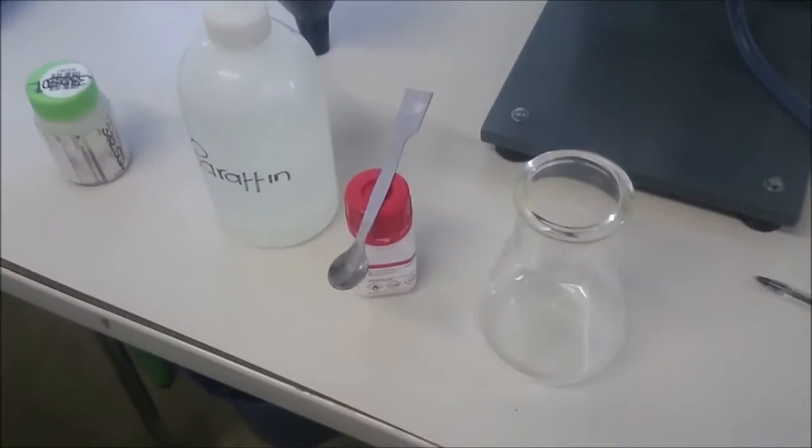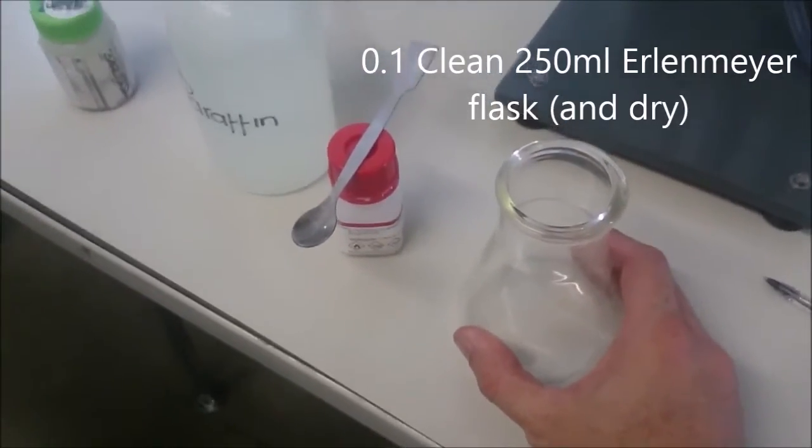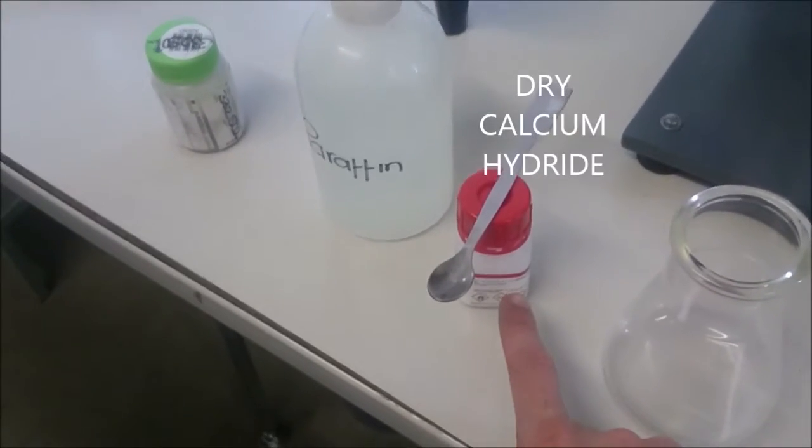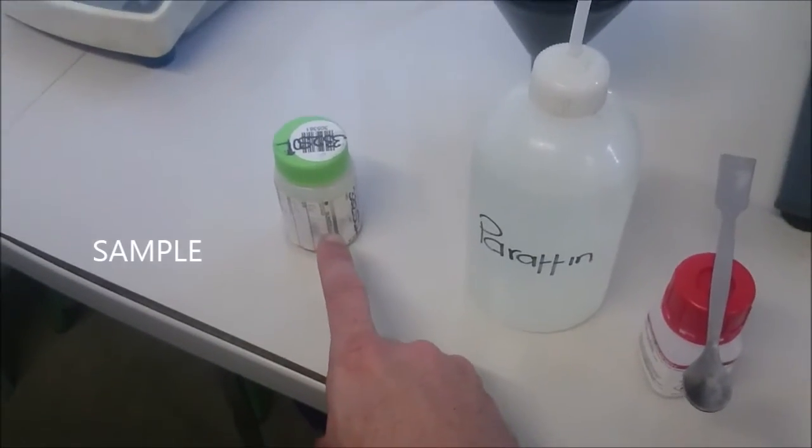So for this test, as part of our preparation, we have a clean and dry Erlenmeyer flask. We've got some calcium hydride. We've got nice clean paraffin and we have the sample that we're going to test.